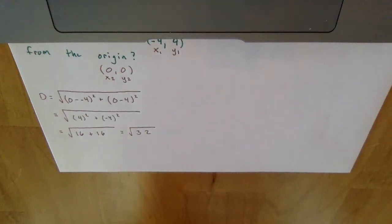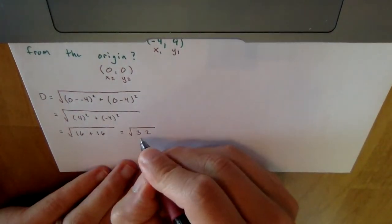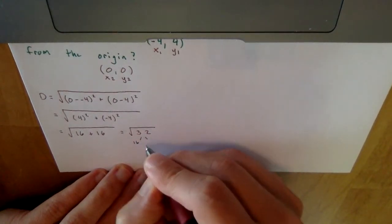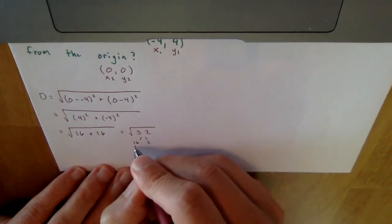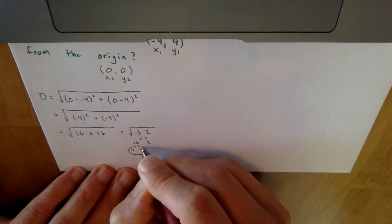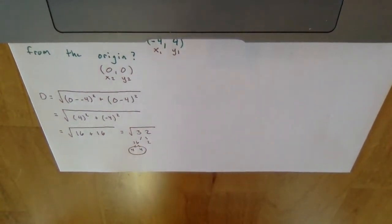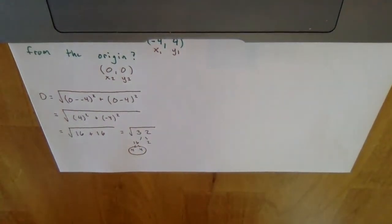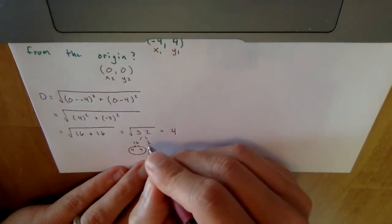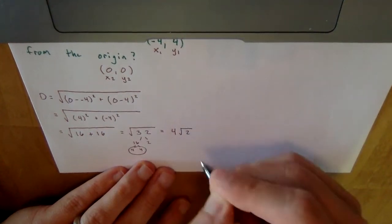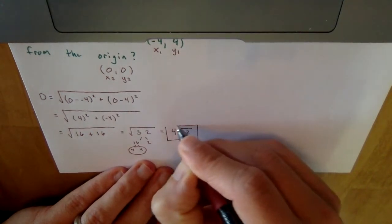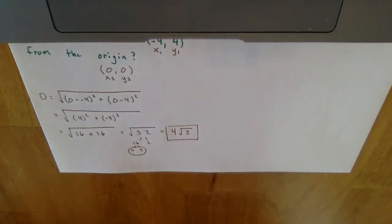Now I'll simplify the square root of 32. Breaking it down: 32 equals 16 times 2, and 16 equals 4 times 4. There's a pair of fours — they move to the outside of the radical. The leftover 2, which has no partner, stays inside. So the answer is 4 times the square root of 2.